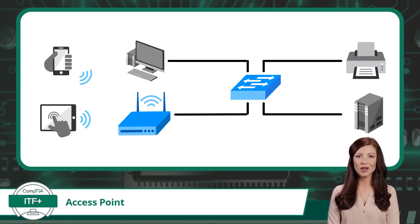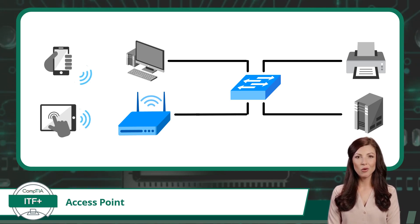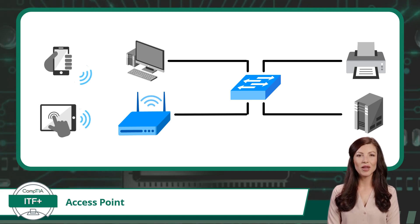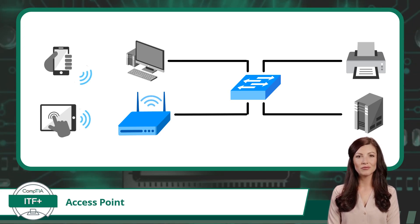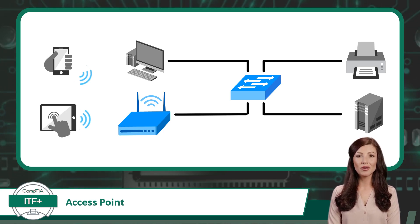You might be wondering how devices connect to a wireless access point. Well, it's as easy as connecting to a Wi-Fi network. When you turn on your device's Wi-Fi, it scans for available wireless networks, and when it detects a wireless access point, it prompts you to connect to it. Once connected, you can access the network's resources and communicate with other devices in the network, just like you would in a wired network.